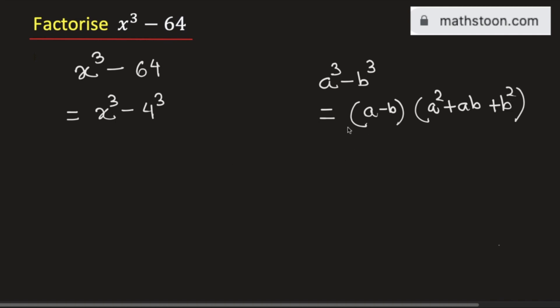So, applying this formula with a is equal to x and b is equal to 4, this will be equal to x minus 4 times x square plus x times 4 plus 4 square.